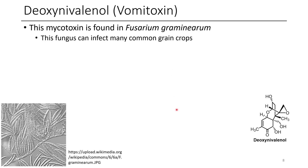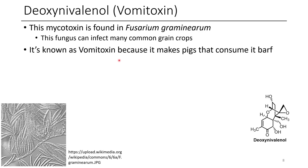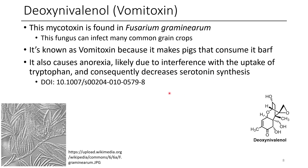The next compound is vomitoxin — a name with a real ring to it. This mycotoxin is found in Fusarium graminearum and can also infect many grain crops. It's known as vomitoxin because when pigs eat stuff contaminated with it, the pigs vomit. Other animals that can't vomit just generally don't want to eat, and it can also give them diarrhea. This is believed to be due to interference with tryptophan uptake, subsequently causing a decrease in serotonin synthesis in the brain.